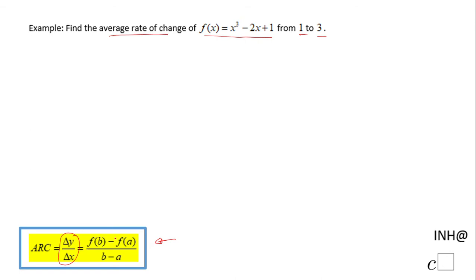The change in y is nothing else than f(b) - f(a) in that interval starting from a to b, and the change of x is obviously b - a. So that's the formula for the average rate of change.